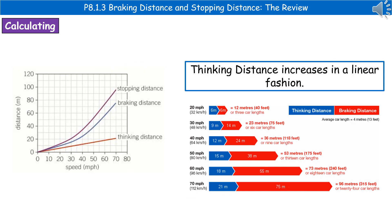Finally, consider the relationship between speed and these different distances. Looking at thinking distance, it's a linear relationship — for every 10 miles per hour increase in speed, the thinking distance increases by 3 metres. The same isn't true for braking distance: a 10 mph increase between 20 and 30 mph increases braking distance by 8 metres, but a 10 mph increase between 60 and 70 mph increases it by 20 metres. Include specific numbers in your answer where you can.